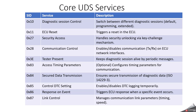Service 0x83 is Access Timing Parameters — it is optional and configures timing parameters for communication. Service 0x84 is Secured Data Transmission, which ensures the secure transmission of diagnostic data. Service 0x85 is Control DTC Setting — during flashing, if you want to control your DTC, then we have to use the 0x85 service.